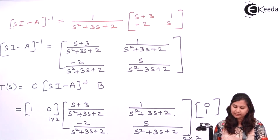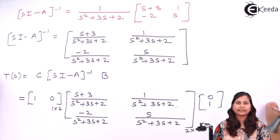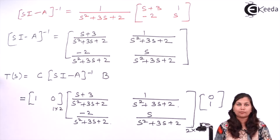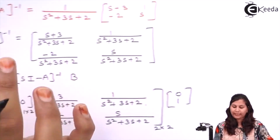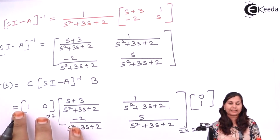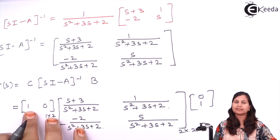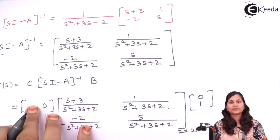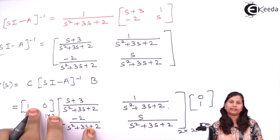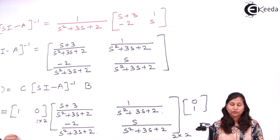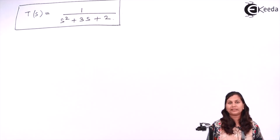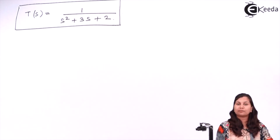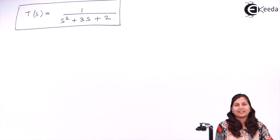So what we have done here is taken an example of how to derive the transfer function using the state model of the system. You just need to calculate sI minus A inverse — the A, B, C, D matrices are already given in the state model. Put in their values and you can calculate the transfer function. I hope this topic is clear. Thank you.